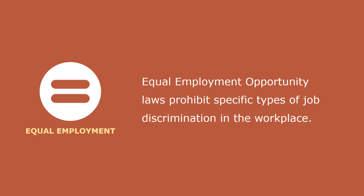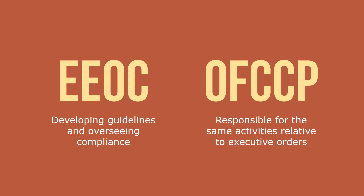Let's focus on regulations in the form of equal employment opportunity, or EEO, laws and other regulations related to fair treatment of employees. Equal employment opportunity laws prohibit specific types of job discrimination in the workplace, and EEO laws and executive orders are intended to eliminate employment discrimination. Two agencies oversee equal employment regulations: the Equal Employment Opportunity Commission, or EEOC, responsible for developing guidelines and overseeing compliance with most anti-discrimination laws, and the Office of Federal Contract Compliance Programs, or OFCCP, responsible for the same activities relative to executive orders and work in the federal government.